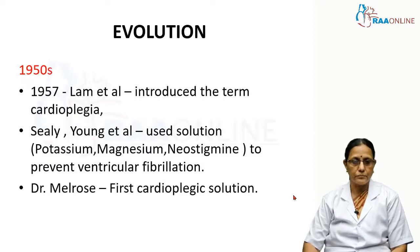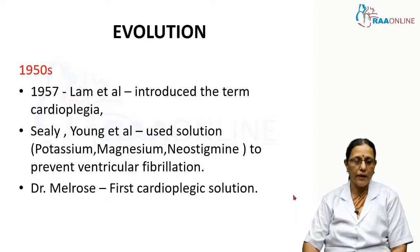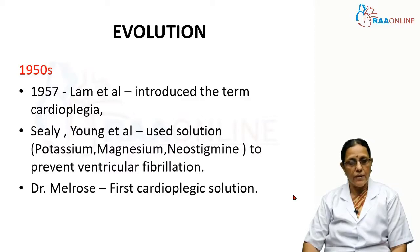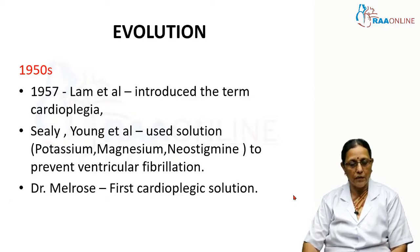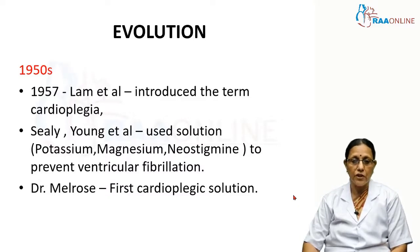Coming to the evolution — way back in the 1950s, when doctors were doing cardiac work, they wanted to stop the heart and perform on a motionless heart. In 1957, Lamb et al introduced the term cardioplegia, meaning the stopping or paralysis of the heart. Clowes and Young used a solution rich in potassium, magnesium, and neostigmine to stop the heart and prevent ventricular fibrillation.